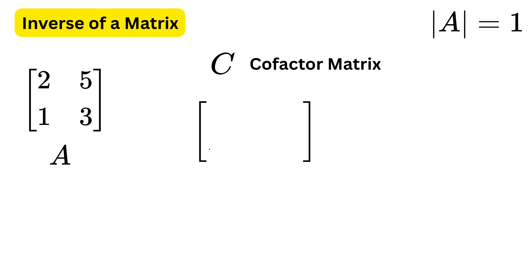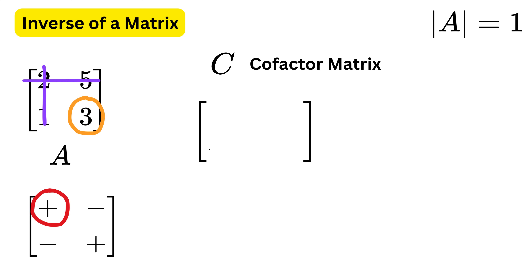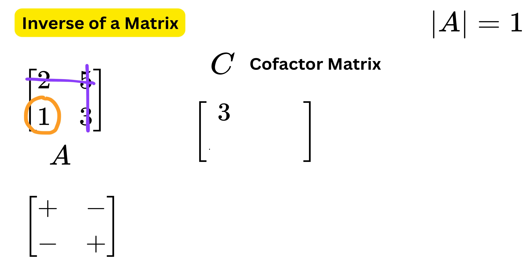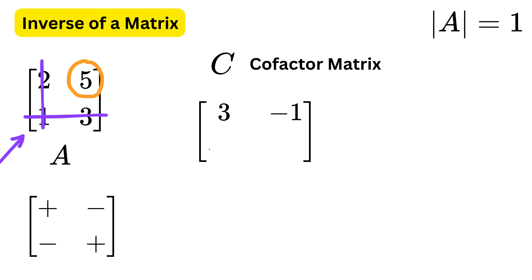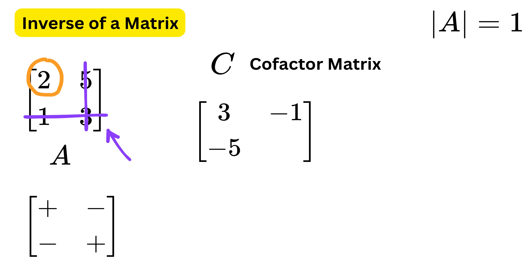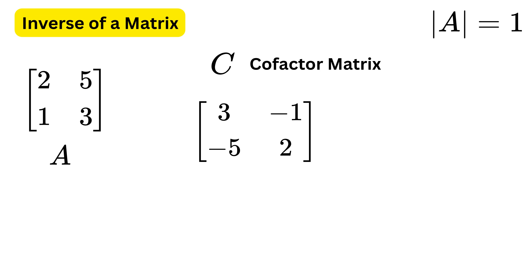Step 2 is to find the cofactor matrix. We find the cofactor of every element. First, make the alternate plus-minus pattern. The minor of the first element is 3, and we multiply it with plus 1 to get 3. The minor of the next element is 1, and for the cofactor we multiply by minus 1 to get minus 1. The minor of the next element is 5, and for the cofactor we multiply by minus 1 to get minus 5. Finally, the minor of the last element is 2, and multiplying by plus 1 gives 2. This is how we find the cofactor matrix.